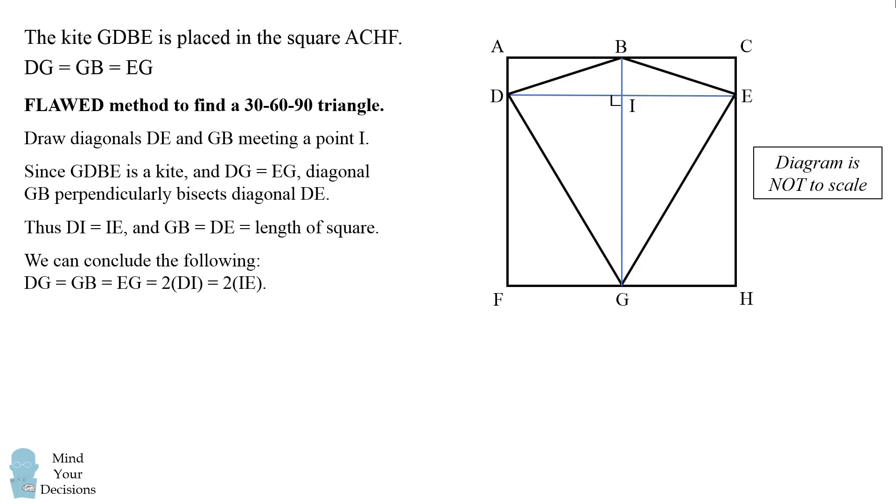We can conclude the following: DG = GB = EG = 2(DI) = 2(IE). Hence triangles DIG and EIG are 30-60-90 right triangles because they're right triangles which have a hypotenuse which is 2 times one of their legs, and angles DGI and EGI are 30 degrees.